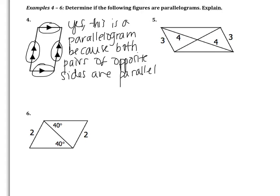In example 5, we have one pair of sides congruent and one diagonal that is bisected. This would be a parallelogram if both pairs of sides were congruent — but we don't know that — or if both diagonals were bisected — but we don't know that either. So no, this is not a parallelogram.